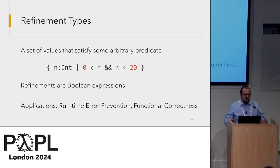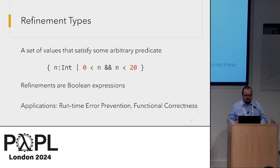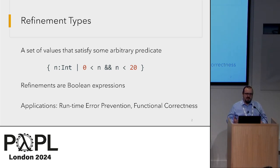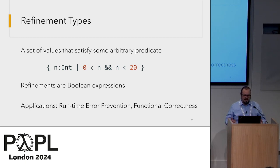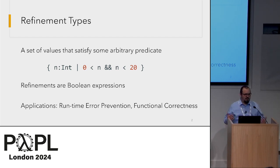In case you're not aware of refinement types, this is a type system that can represent various sets of values. The domain will be a type in our underlying system, constrained by some kind of arbitrary predicate. These predicates, or refinements, are Boolean expressions. The typical applications of refinement type systems are to prevent runtime errors at compile time, like array out of bounds, and to be a lightweight verifier for functional correctness.